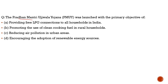Question six: the Pradhan Mantri Ujjwala Yojana was launched with the primary objective of — prompted by a report on its achievements in Jammu and Kashmir. Key facts: launched in 2016 by the Ministry of Petroleum and Natural Gas, targeting women and poor and marginalized sections of rural households. Option A — providing free LPG connections to all households in India — incorrect, not all households. Option B — promoting the use of clean cooking fuel in rural households — 100% correct. Options C and D about urban air pollution and renewable energy are not the primary focus. Correct answer is option B.